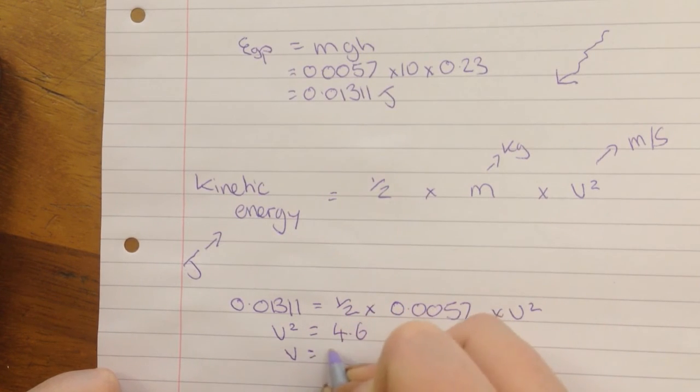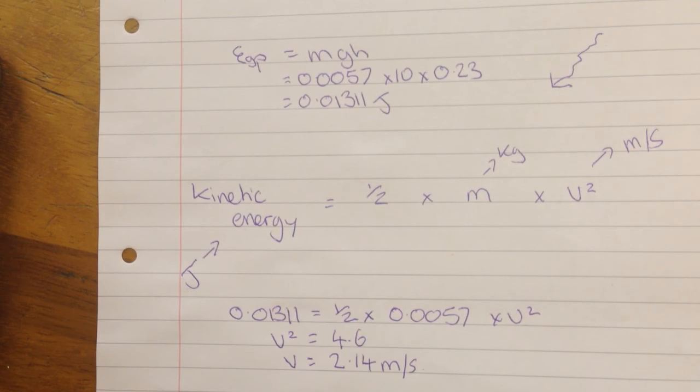So the velocity must be equal to 2.41 metres per second. So it may look quite impossible to work out the velocity and the gravitational potential energy from just a simple child's game. But it was actually quite easy. You just had to do a little bit of thinking and use your equations properly.